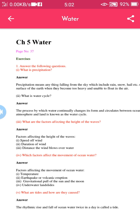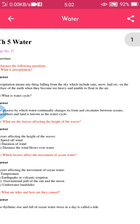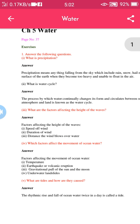Question number two: What is a water cycle? The process by which water continually changes its form and circulates between oceans, atmosphere, and land is known as the water cycle.